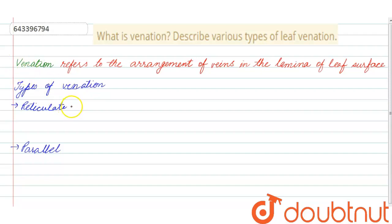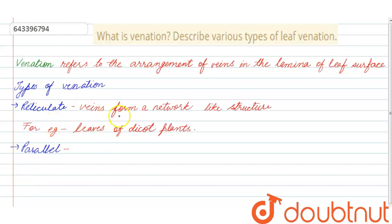Reticulate venation is a type of venation in which veins form a network-like structure. This type of venation — reticulate venation — is observed in the leaves of dicot plants.